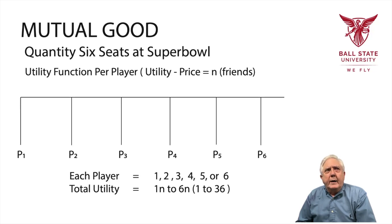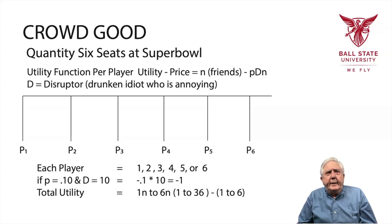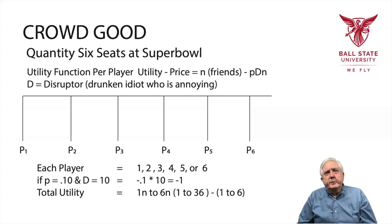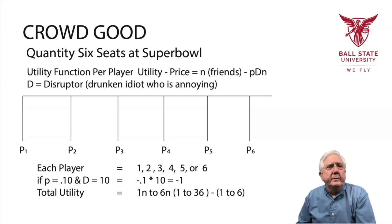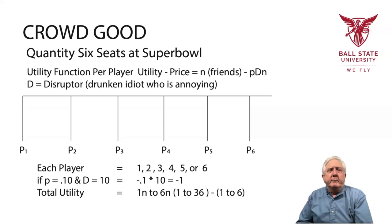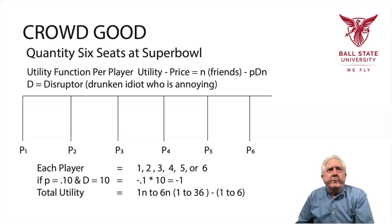But there are problems, and sometimes a mutual good can be a crowd good. Here we have the same six friends at the Super Bowl, and their utility function is very similar to before: utility minus price equals N. But now we have something to account for disruptors — a minus probability of a disruptor times the number of friends. D equals a disruptor, meaning some drunken idiot who's annoying.